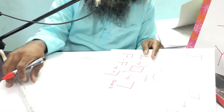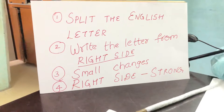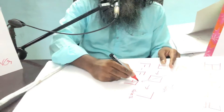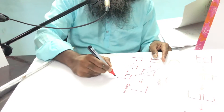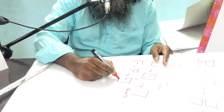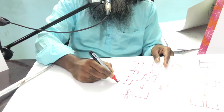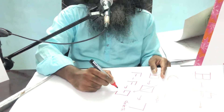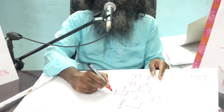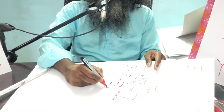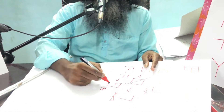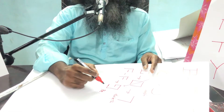Now I am using the third technique: I make small changes. I connect these two and I extend this line inward. This is the Hebrew letter Pe. F and Pe both have the sound Pa.